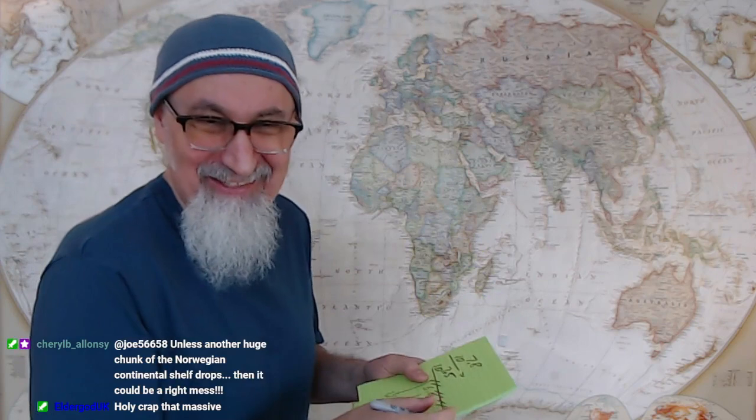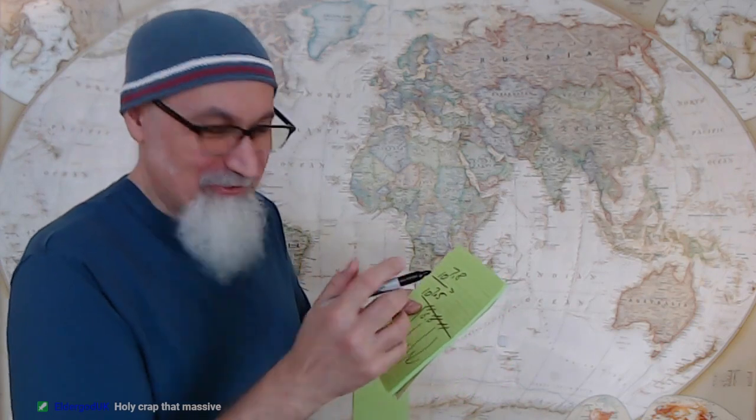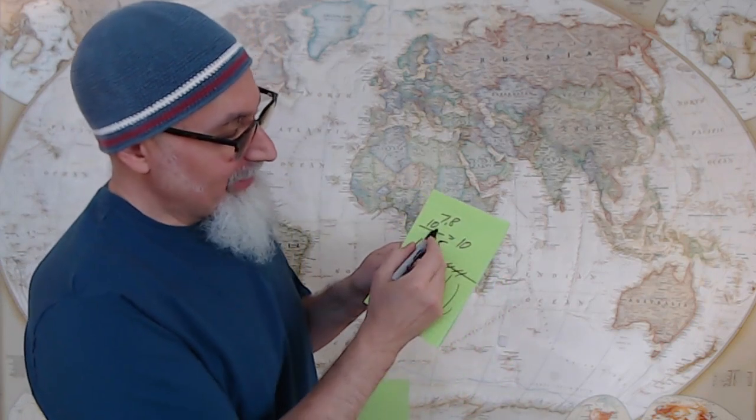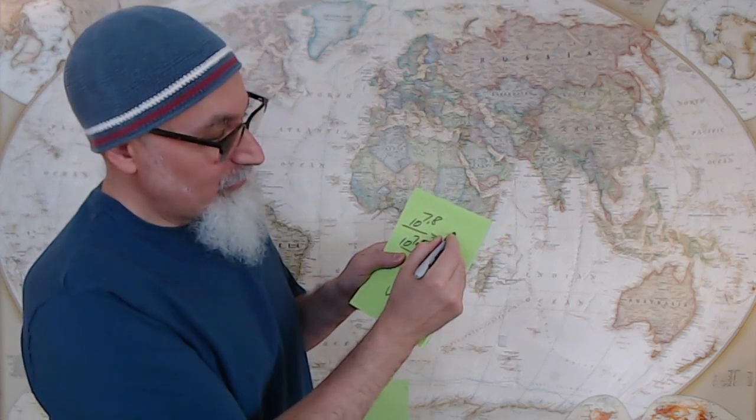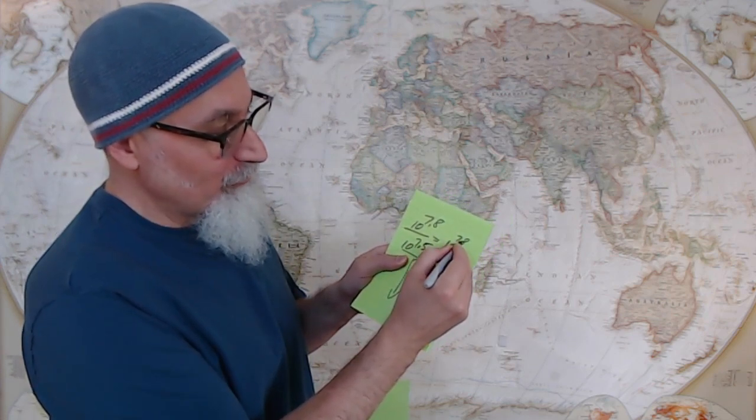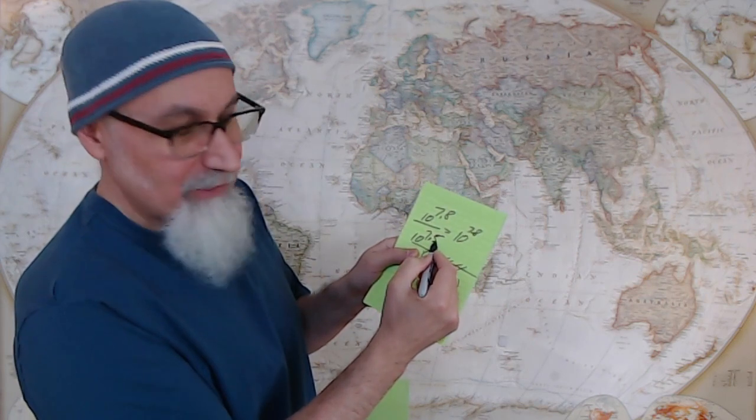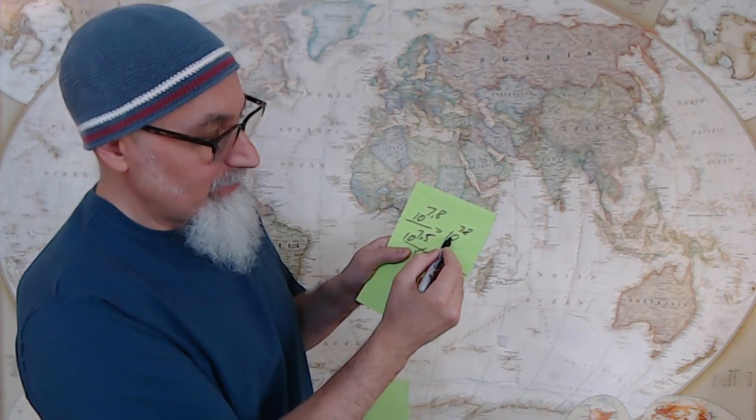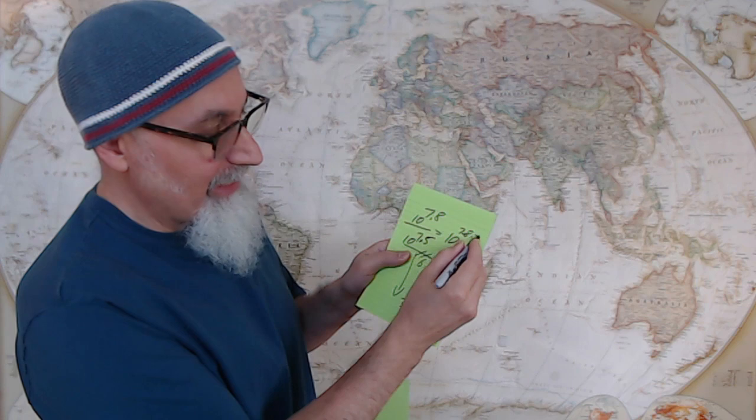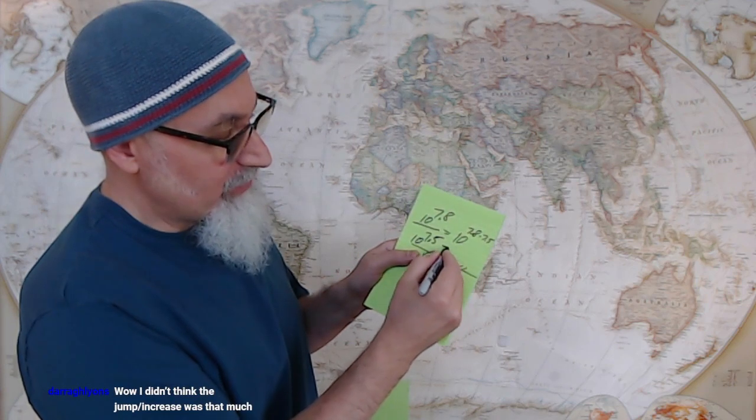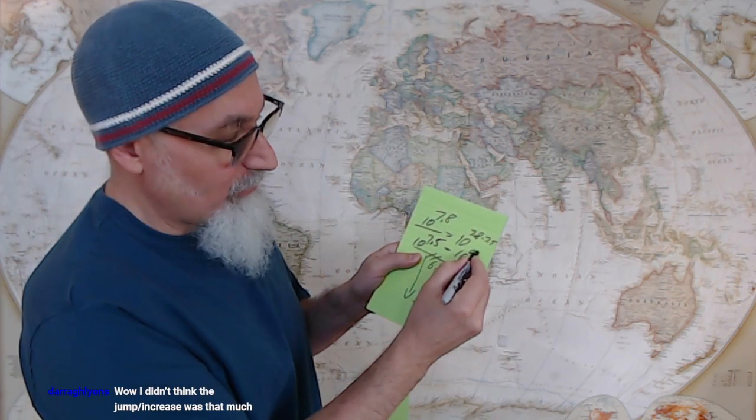When you're doing division of powers, I don't want to go into the rules of this, but you subtract these, right? So you go 10 to the power of 7.8 minus 7.5, which is equal to 10 to the power of 0.3.